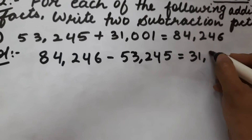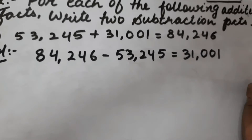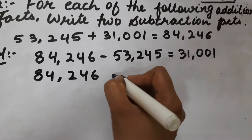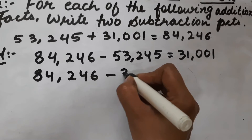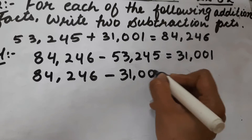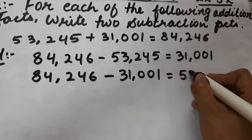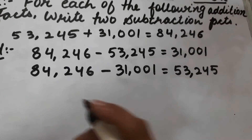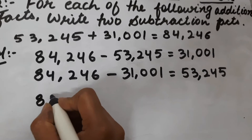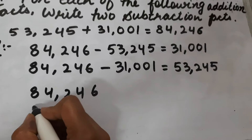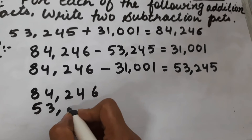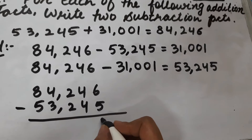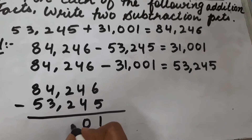And if we subtract the second addend from the total, we will get the first addend. You can check by actual subtraction also — I am showing you. See, 84,246 minus 53,245. If we subtract these two numbers: 6 minus 5 is 1, 4 minus 4 is 0.